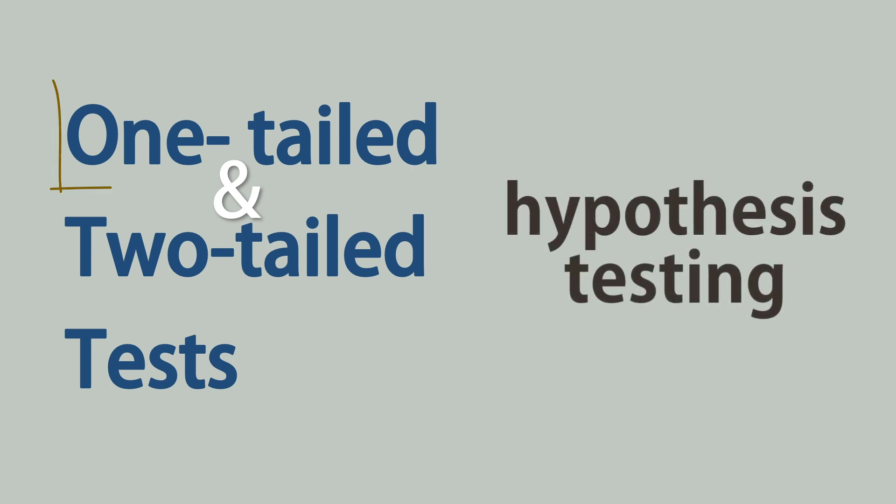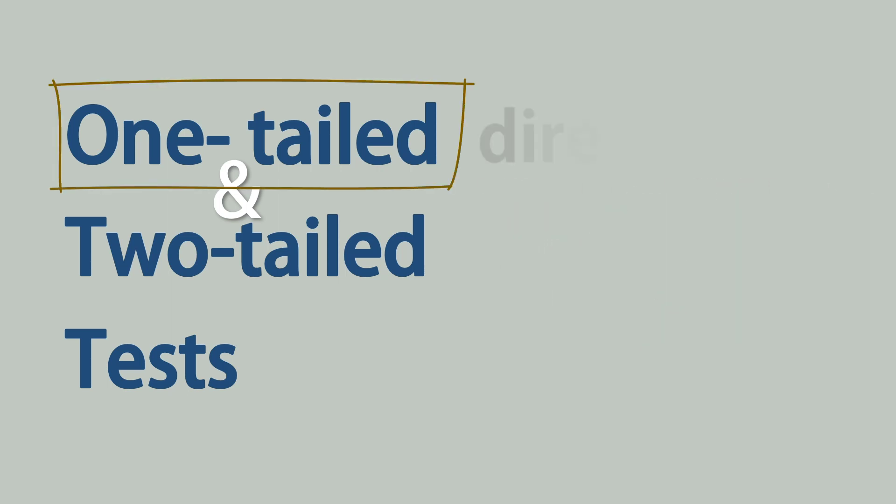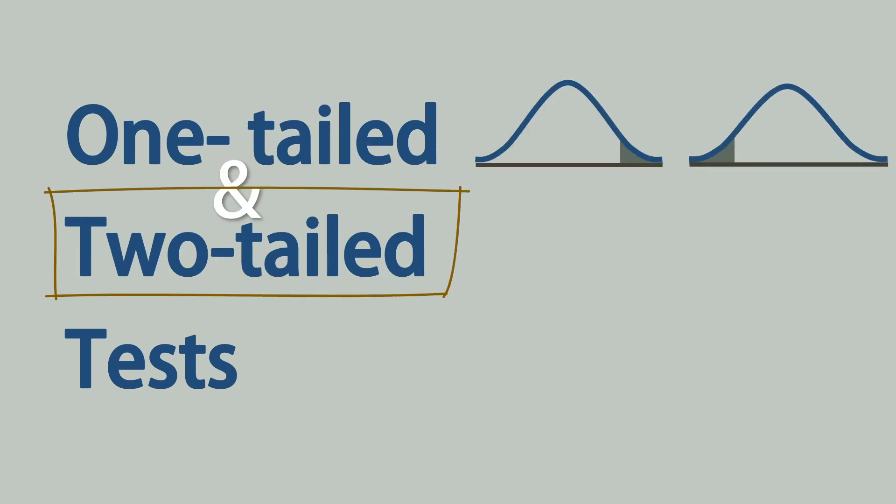In hypothesis testing, a one-tailed or directional test is either a right-tailed or a left-tailed test, while a two-tailed test, called non-directional, is both right and left-tailed at the same time.